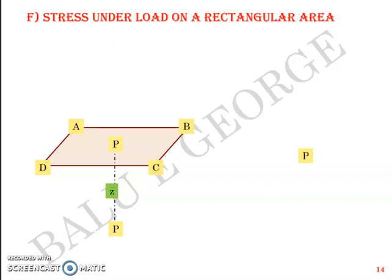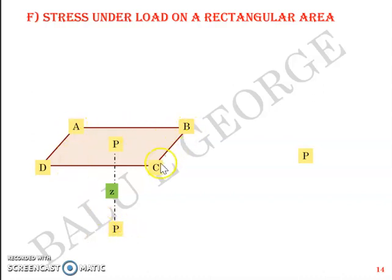In the previous video we discussed how to find the vertical stress intensity at a point P which is directly below the corner of a rectangular area. However, that method is limited to when point P is just below the corner. But what if the point of interest is not below the corner? For instance, you have a rectangle ABCD and point P is not below any corner — it's below the center.